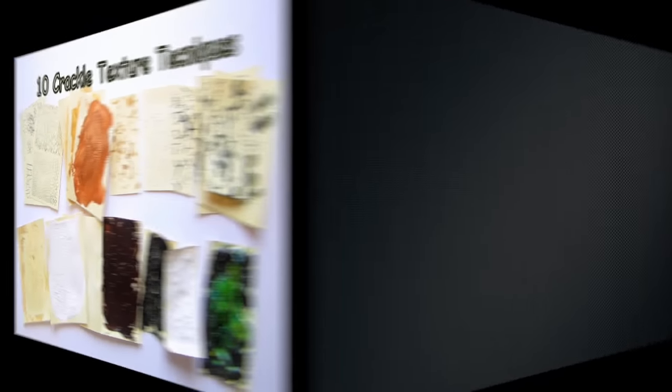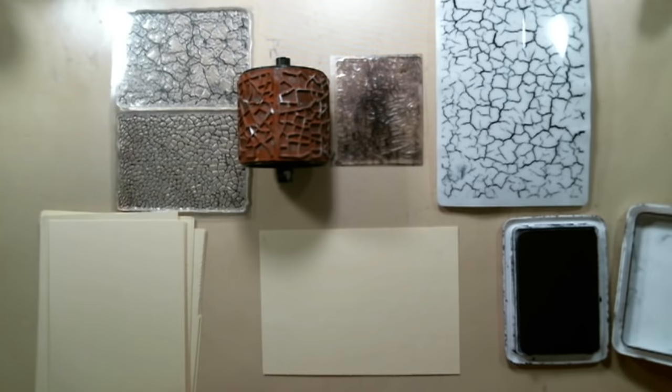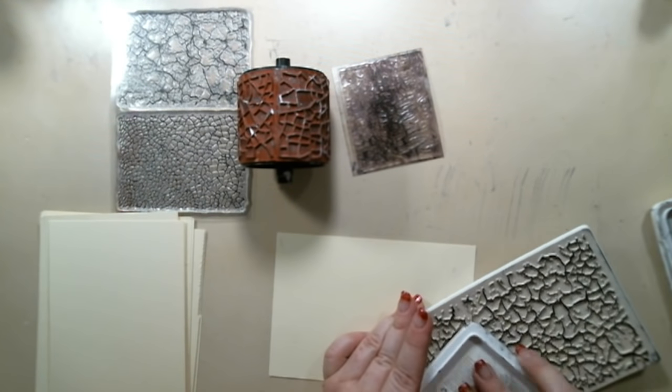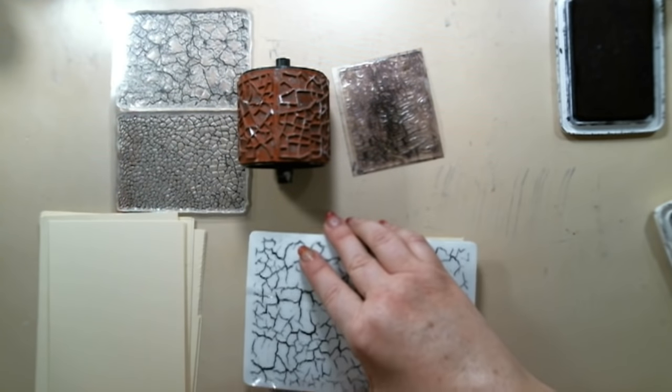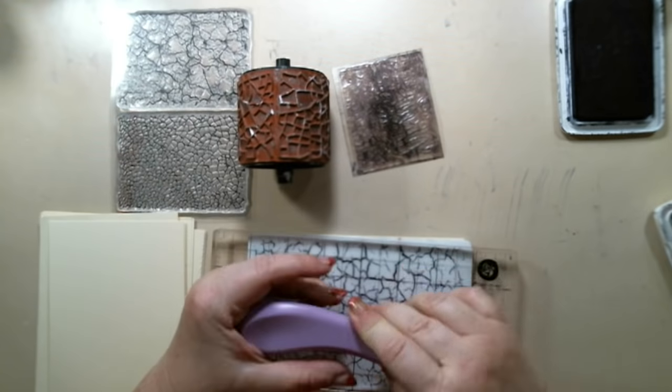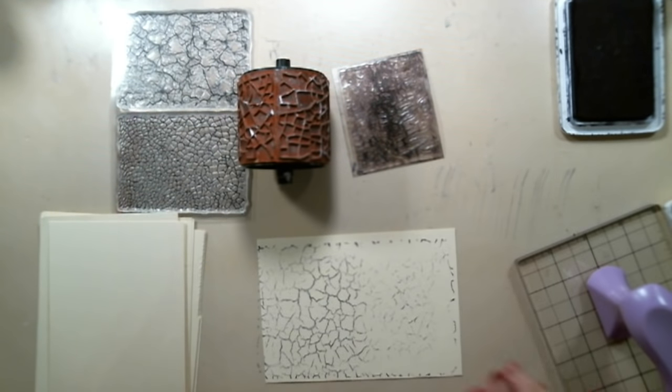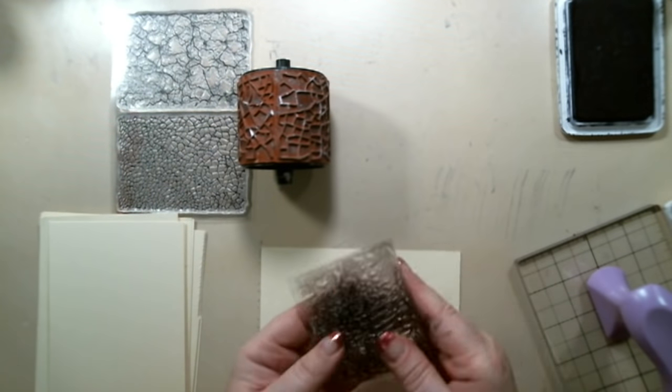Technique number one is stamping with a crackle texture stamp and dye ink or any type of ink. I use black archival ink from Ranger and I just stamped different textured stamps onto my cardstock. These are stamps from different manufacturers and I will list all my products below in the description area so you know which ones I've used.